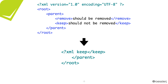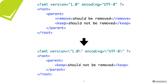However, the problem is the way the test is written — if you execute it, it will pass even with input that is not even valid XML, because it fulfills all the assertions. It just says 'keep is still there and remove is not,' so the test passes — which is bad, because that's not what we want.